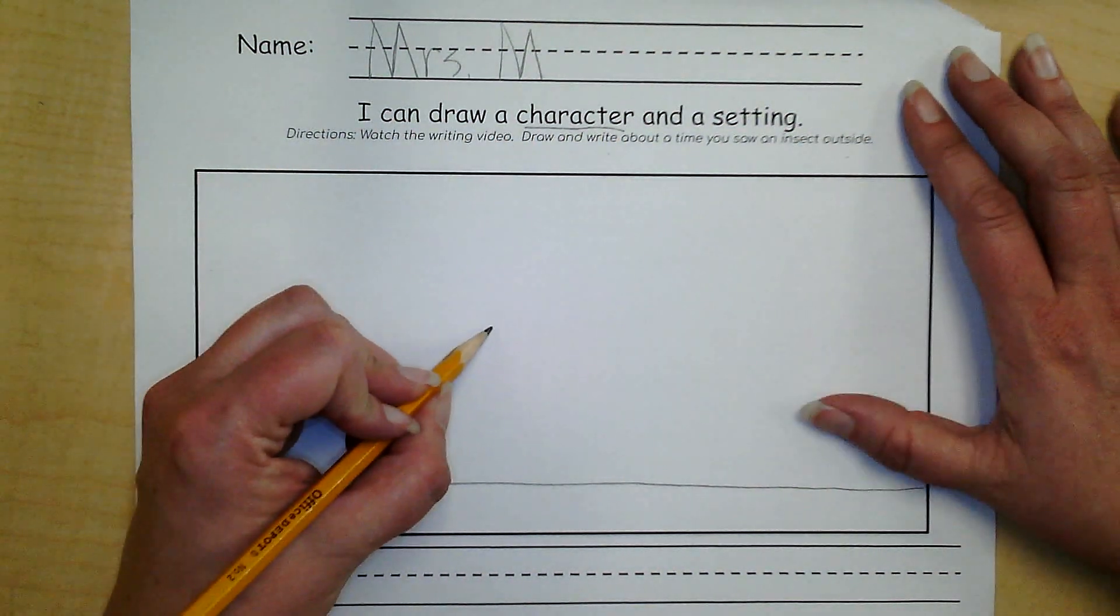Okay. My story says I see ants. And I have a picture of me pointing at the ants that I see outside and a picture of my mom going ah, because I'm sitting in a bunch of ants. All right friends. When was the time that you saw some insects outside? Have some fun writing and drawing about a time that you saw insects outside. Make sure that your story is not the same as my story. You think about a time that it really happened to you. Bye friends.